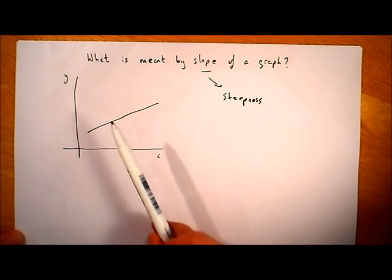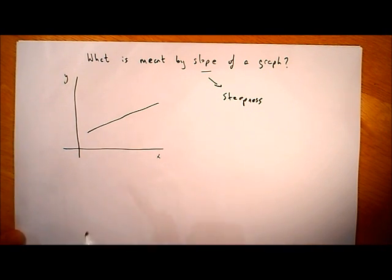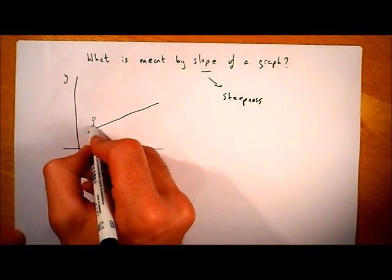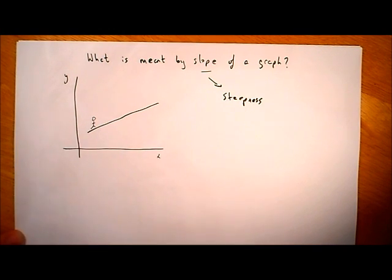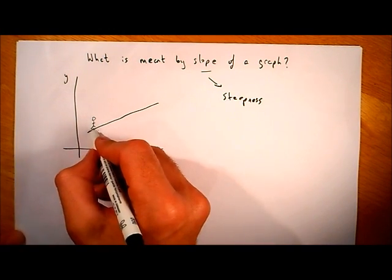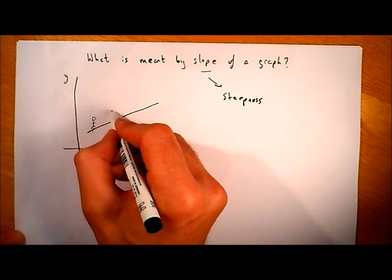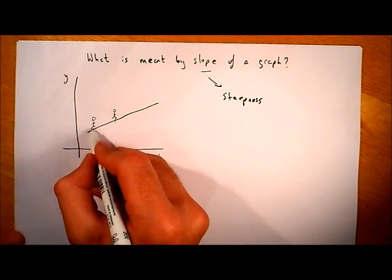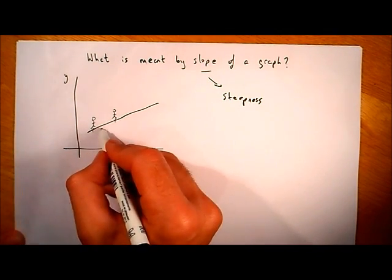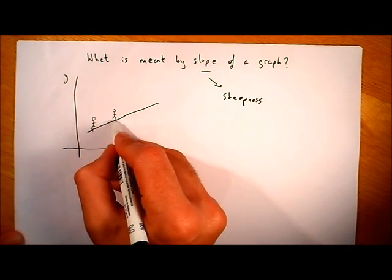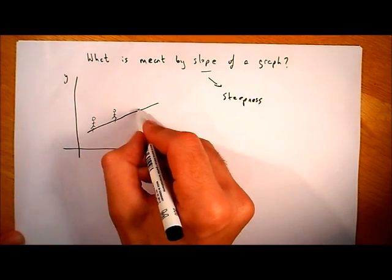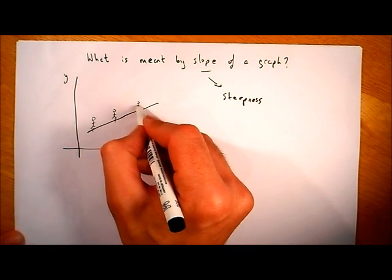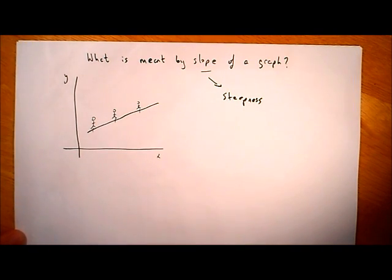If you look at it, this line here has a certain steepness. If you imagine you were walking — if you were somehow able to stand on the line and walk from here to here — you would have walked up a certain steepness. And the steepness between this point and this point is exactly the same as the steepness between this point and this point, because it's a straight line.